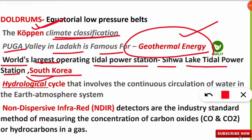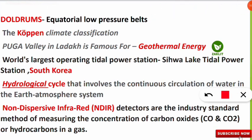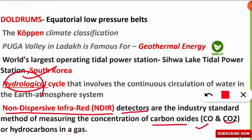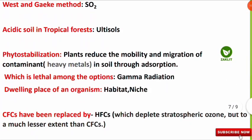The hydrological cycle involves the continuous circulation of water in the Earth-atmosphere system. The correct term is hydrological cycle, not hydrology cycle. NDIR stands for Non-Dispersive Infrared and detects carbon monoxide and carbon dioxide. It also measures hydrocarbons, but the correct option from the exam was carbon monoxide and carbon dioxide.